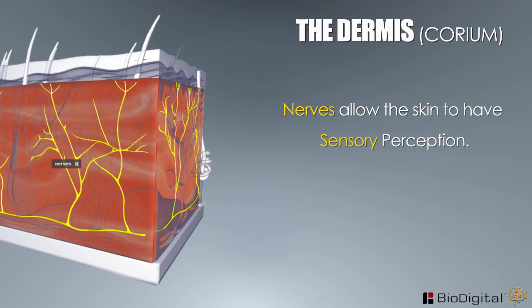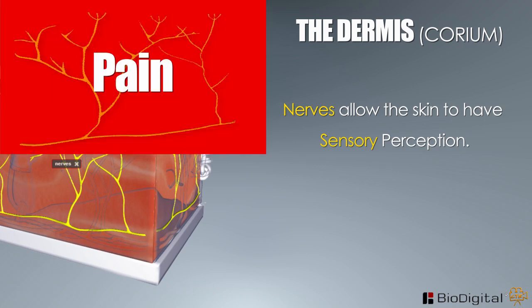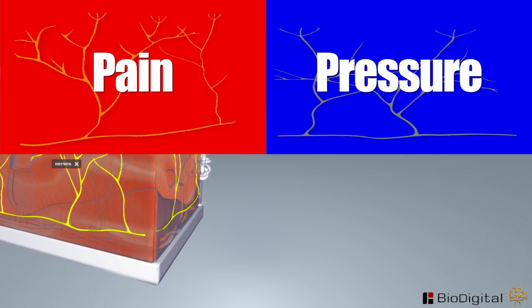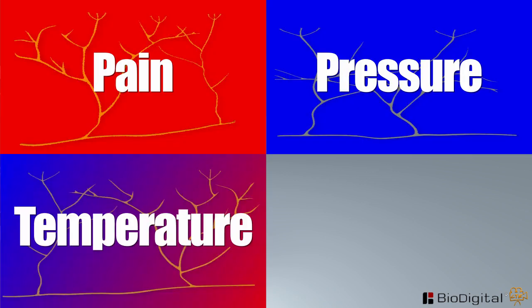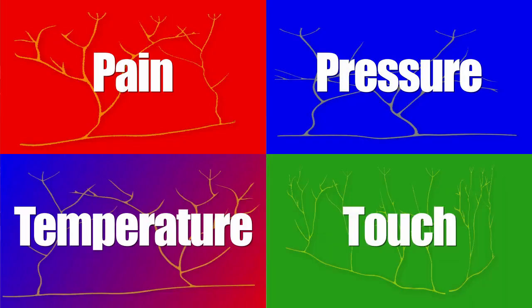Nerves allow the skin to have sensory perception. Through the skin, the body is able to respond to pain, pressure, temperature, as well as touch sensations.